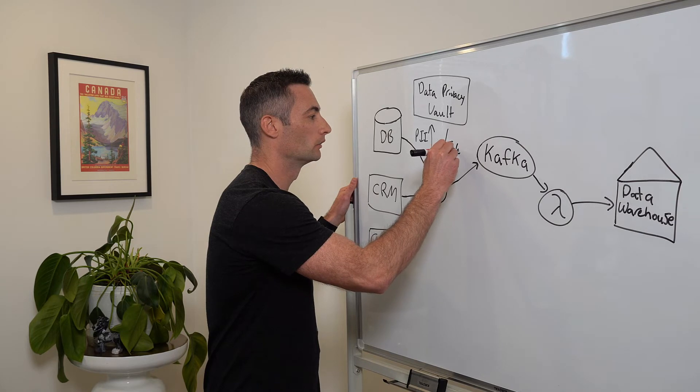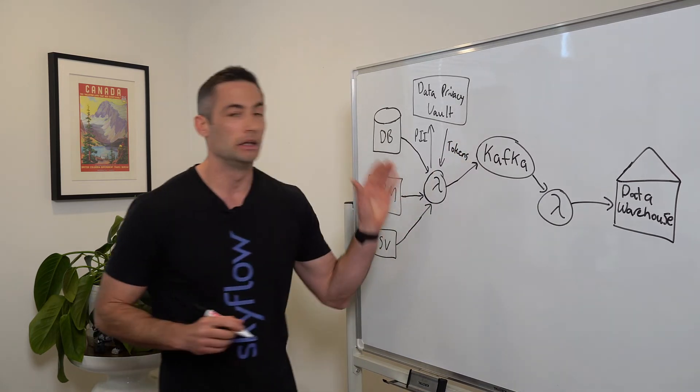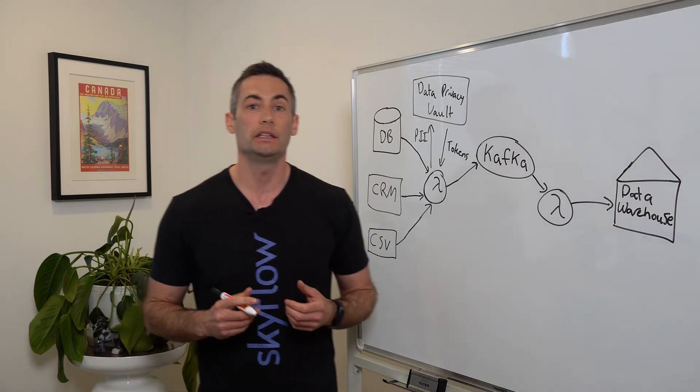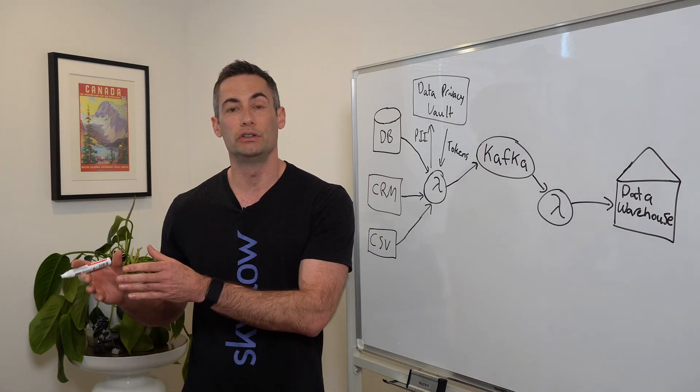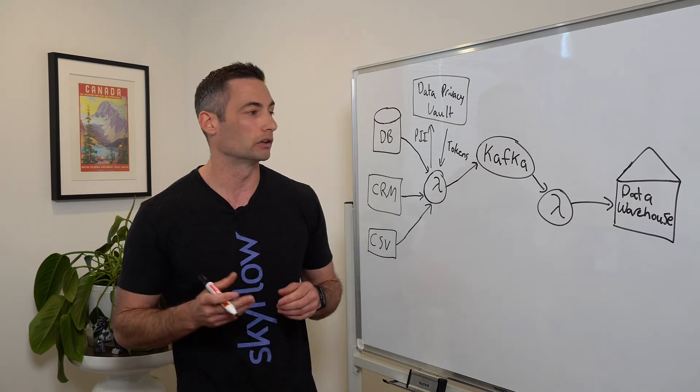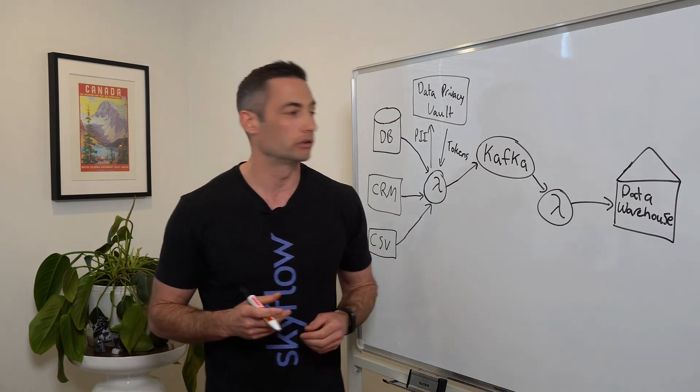So what we can do instead of storing the plain text values is we can send tokenized versions of the data to the data warehouse. So instead of a name in plain text being sent into the data warehouse, we could send a UUID where, through detokenization, can be mapped back to the name, assuming that the service asking for the detokenization has the rights to do that.